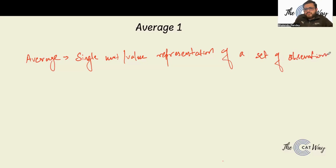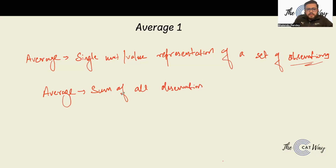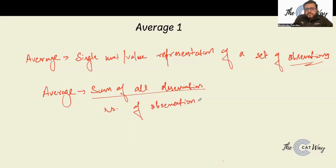In formula terms, average is nothing but the sum of all observations divided by the number of observations.